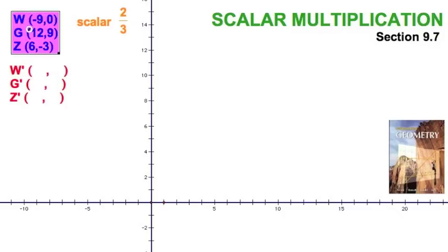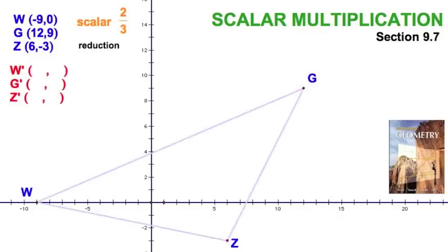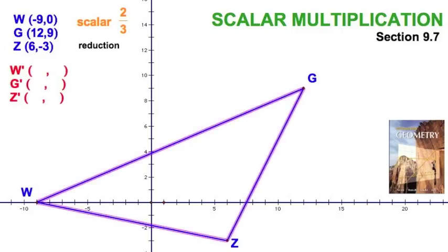We've got a figure right here. This is going to be our triangle. We're going to plot and we're going to have a scale factor of 2/3, making this a reduction. So we'll calculate these coordinates. We picked some easy numbers to work with, all multiples of 3. So let's just get an idea how this works. Let's plot the points W on the x-axis, plotting G over there in the first quadrant, and Z in the fourth quadrant. Drawing our triangle, there's our pre-image.